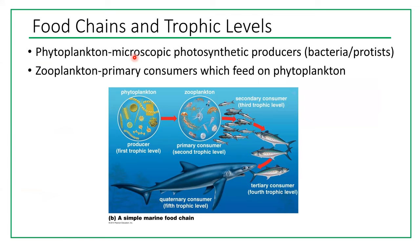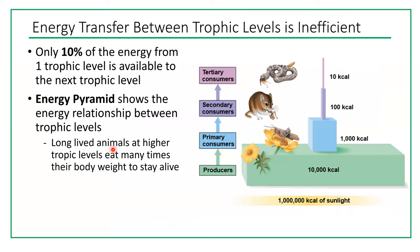Food chains exist in terrestrial and marine ecosystems. In a marine ecosystem, the producers are phytoplankton — microscopic photosynthetic bacteria or protists — and the primary consumers are zooplankton — microscopic protists or small animals. This shows the linear relationship from producers to consumers that defines a food chain.